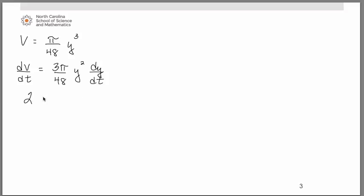So we know dV/dt was 2. Let's go ahead and simplify that fraction and make it π/16. y rather, remember that was 5. So when we square that we have 25. And there's the dy/dt that we're looking for.